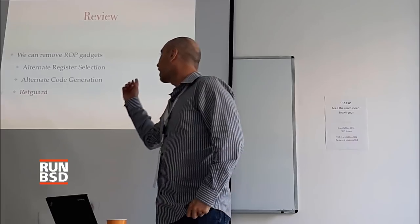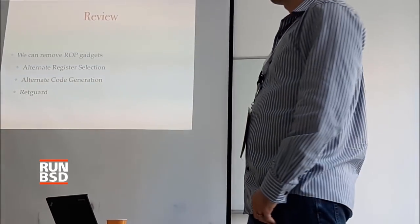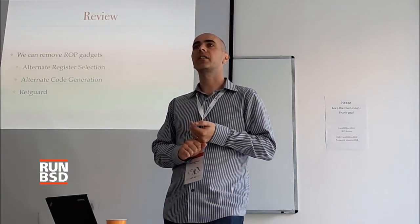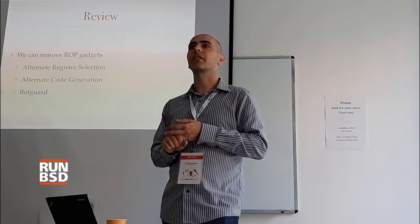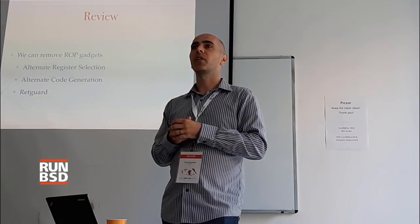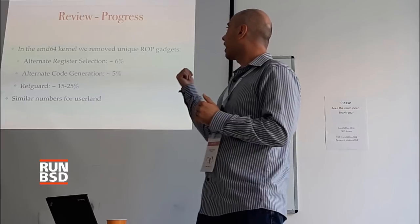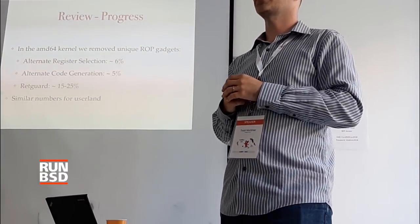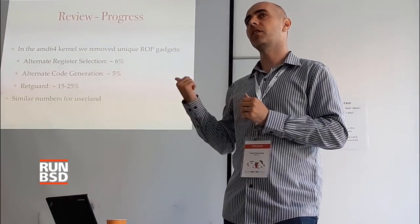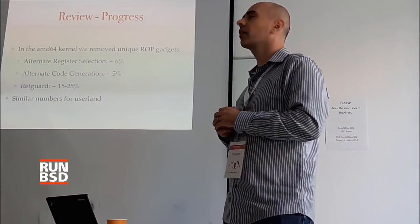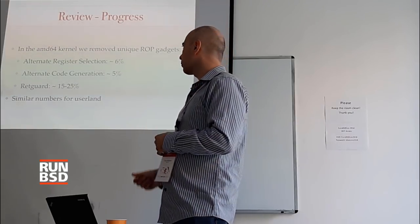Review: at the beginning, about a year and a half ago, I told Theo I bet we can get rid of ROP gadgets, and he said go ahead and try — and it turns out we can. We can choose not to use registers that are going to lead to ROP gadgets. When we do have to use those registers, we can emit alternate instructions that remove the gadgets. And for things where we can't get rid of the RET, we can use RectGuard to protect the returns and disrupt the tooling so it can't find or use those ROP gadgets anymore. On AMD64, just changing register allocation got 6% fewer unique gadgets; finding and fixing up one class of problematic instructions got another 5%; and RectGuard got another 15–25% unique gadgets gone. Similar numbers for userland.